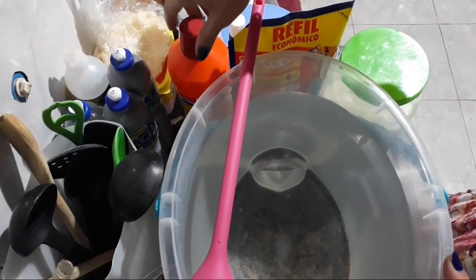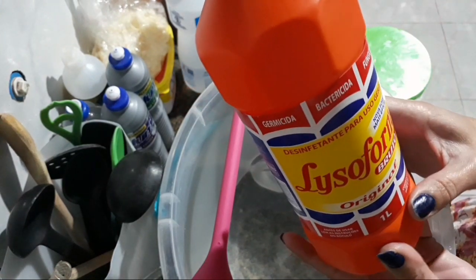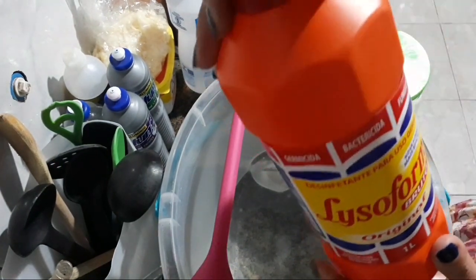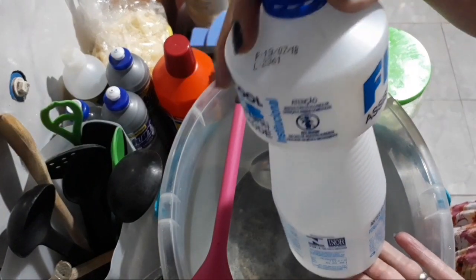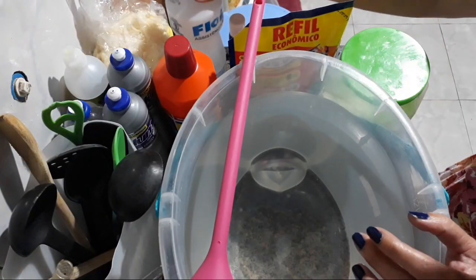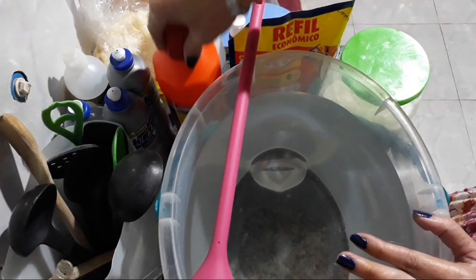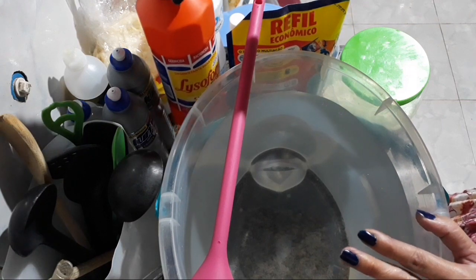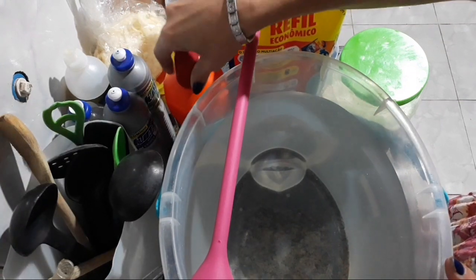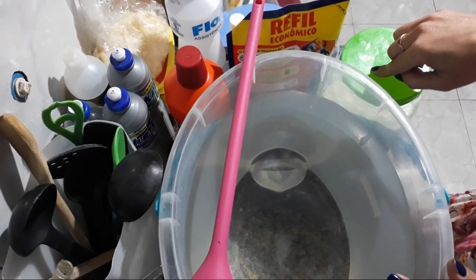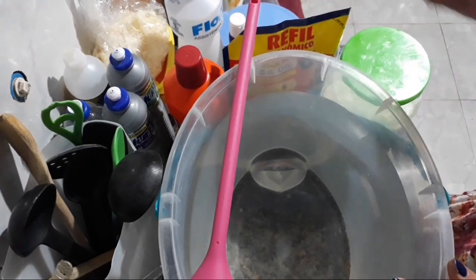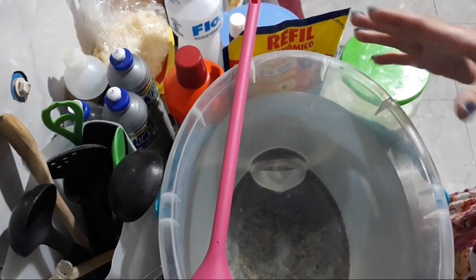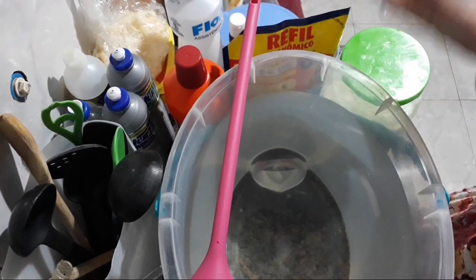E no lugar do cloreto benzalcônico, eu vou estar utilizando o lisoform. Porque ele tem cloreto benzalcônico. Ele é germicida, bactericida e fungicida. E também, eu vou estar utilizando o álcool também para ajudar a fortalecer. Então, vai estar um super limpa-piso. E para limpeza, a gente já sabe que o lisoform também, além de eliminar as bactérias e os germes, também limpa. A barrilha leve também, além de limpar, clareia também, remove manchas. E o omo líquido também vai fazer o efeito daquela espuminha também, de leve. Não vai ser muito, e vai ajudar na limpeza também.